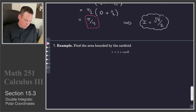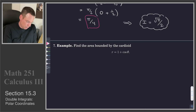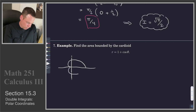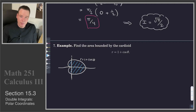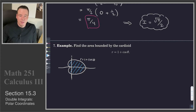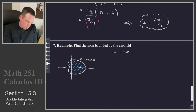Let's have a look at another example: find the area bounded by the cardioid. This comes back to that first problem we did at the very start of this section — find the area bounded by this cardioid. We are looking for the area inside this polar curve, r equals 1 plus cos theta. So far, nothing to do with Calculus 3; this is really just a Calculus 2 problem. But what we could do is reinterpret it in terms of a Calculus 3 problem.